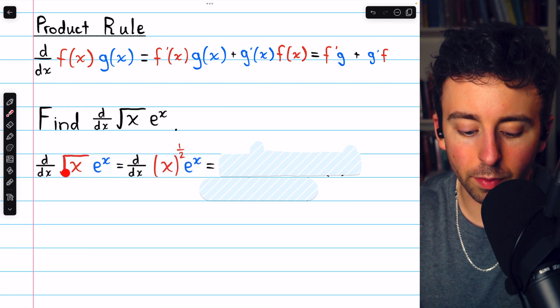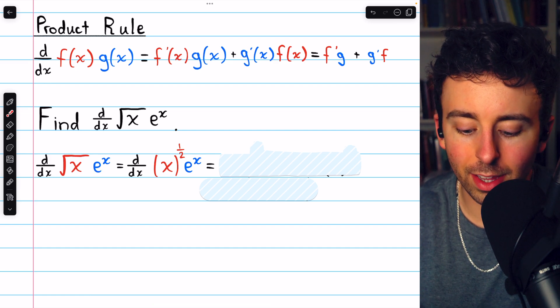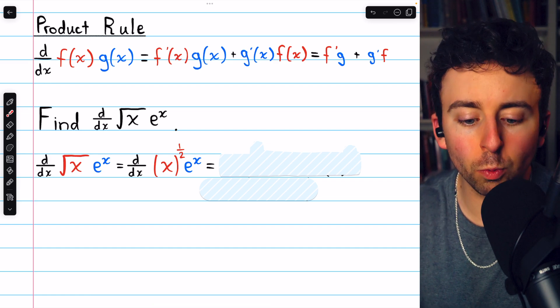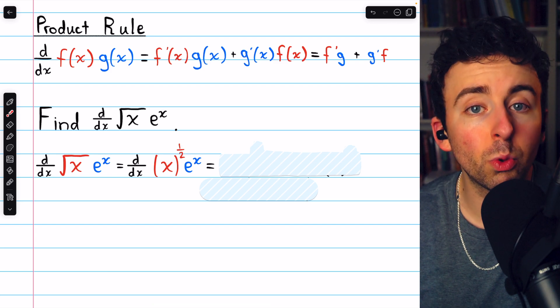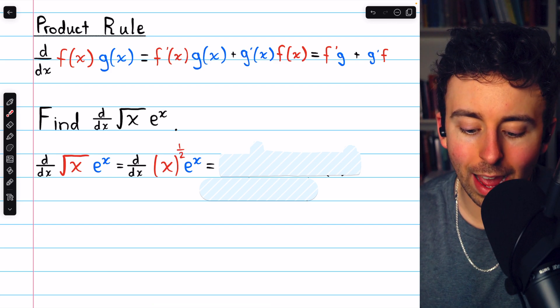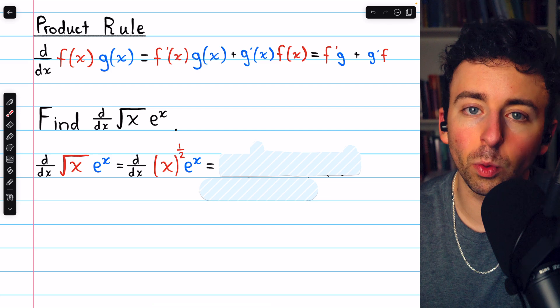To take the derivative of the square root of x times e to the x, we should begin by rewriting the square root as a rational power. Square root of x is the same as x to the one half. That's just going to be easier to take derivatives of.